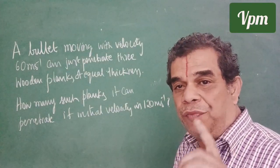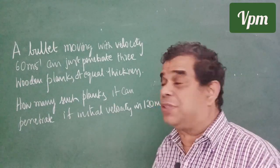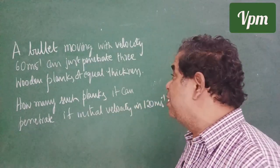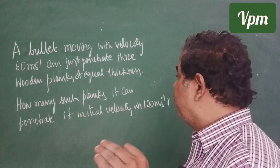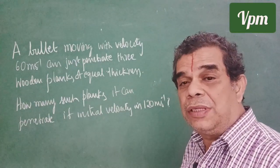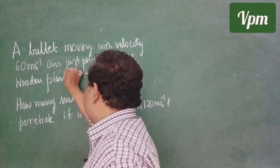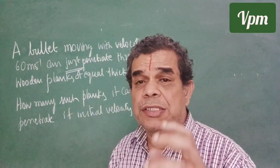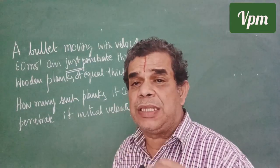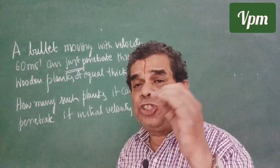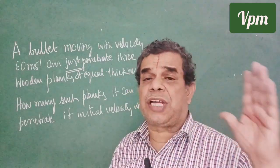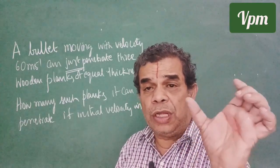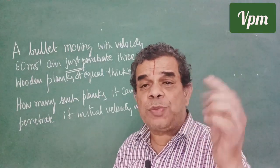First, we try to visualize the first sentence: a bullet moving with velocity 60 meters per second can 'just' penetrate three wooden planks of equal thickness. 'Just' is a very special word — why is it used? Many students will not be able to get this idea. 'Just penetrates' means as soon as it comes out of the wooden plank, that bullet stops — its final velocity is zero.